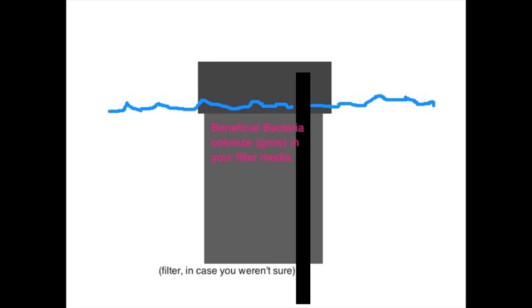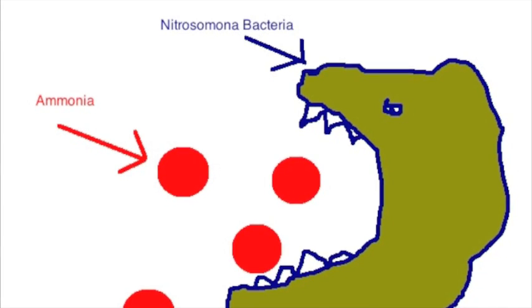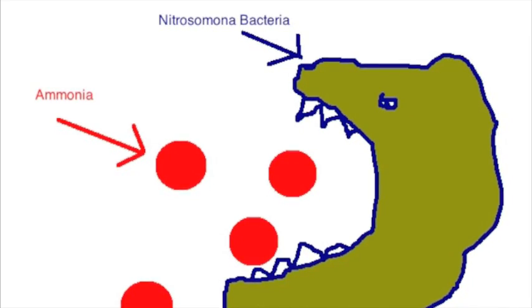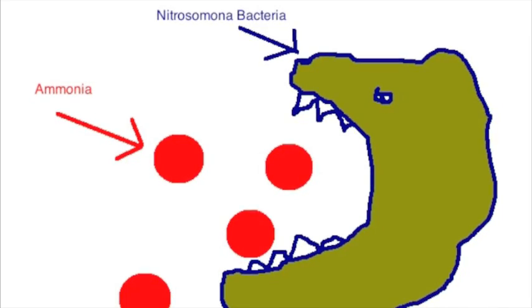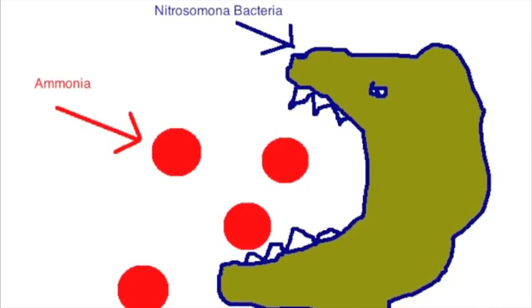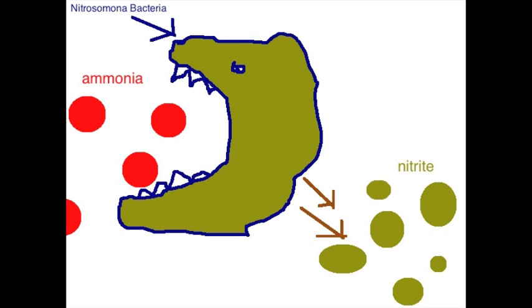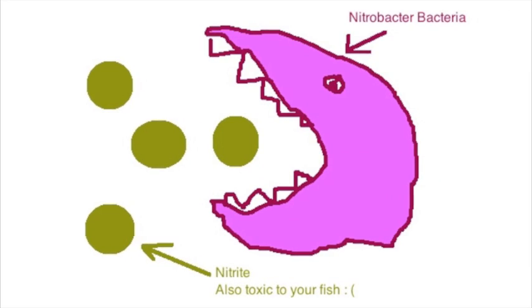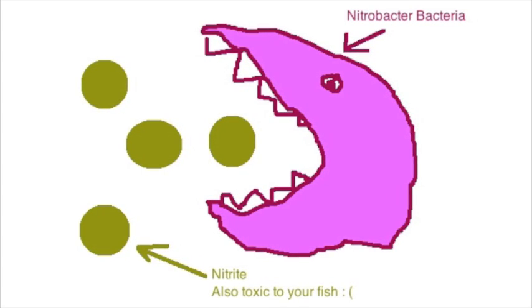There are two types of beneficial bacteria that make up the nitrogen cycle. The first is the Nitrosomonas bacteria, which takes ammonia in the water and uses it as food. In this process, the bacteria produce nitrite as a byproduct. So instead of toxic ammonia, you now have nitrite — which is unfortunately also toxic to your fish. Nitrite affects the blood of fish so that it can no longer carry oxygen effectively, which can eventually lead to suffocation. You'll see your fish gulping for air at the surface or being listless and bottom-sitting.